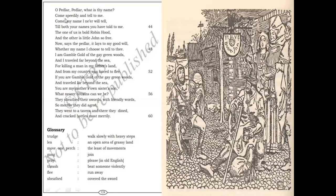Oh peddler, peddler, what is thy name? Come speedily and tell to me. He replied: my name I never will tell till both your names have told me. Then Robin Hood revealed: one of us is bold Robin Hood and the other is little John so free. So Robin Hood is asking the peddler to tell his name, and the peddler then opened his mouth and said: it lays to my good will whether my name I choose to tell to thee. I am Gamble Gold of the gray green woods, and I traveled far beyond the sea.